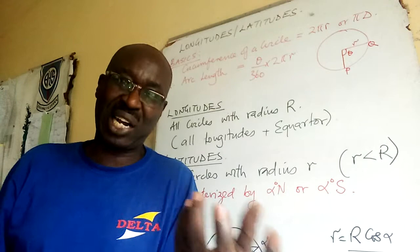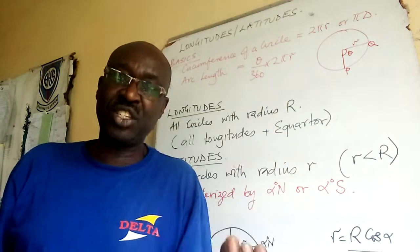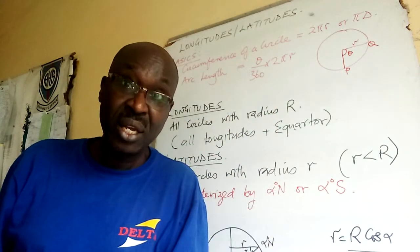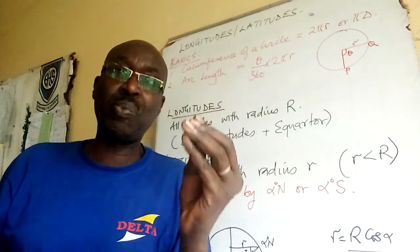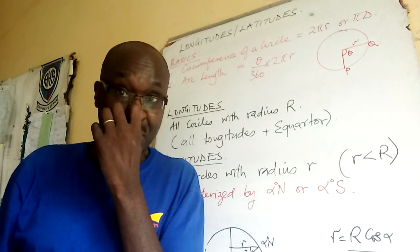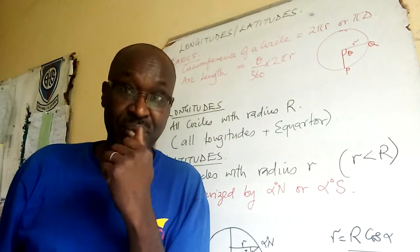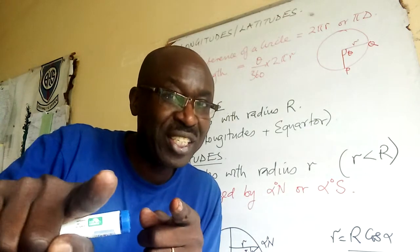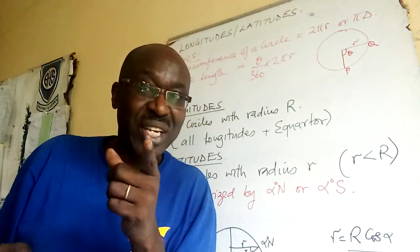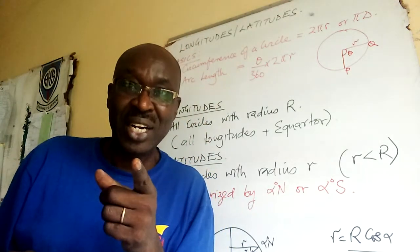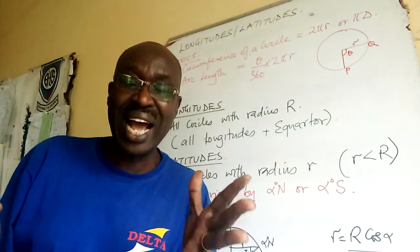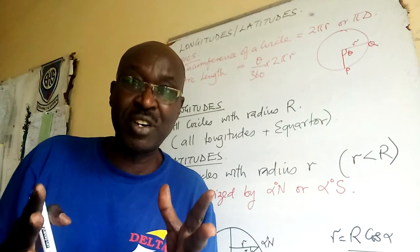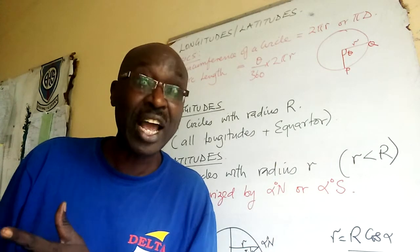Tool number one that you need to know is what you did in primary: circumference. Circumference is equal to πd or 2πr. That knowledge will be required when you are doing longitude difference vis-à-vis time.